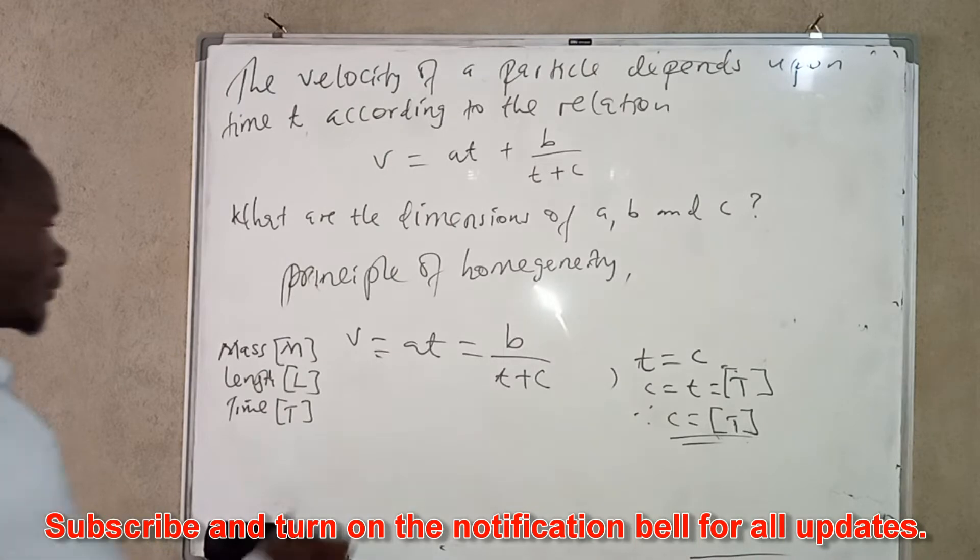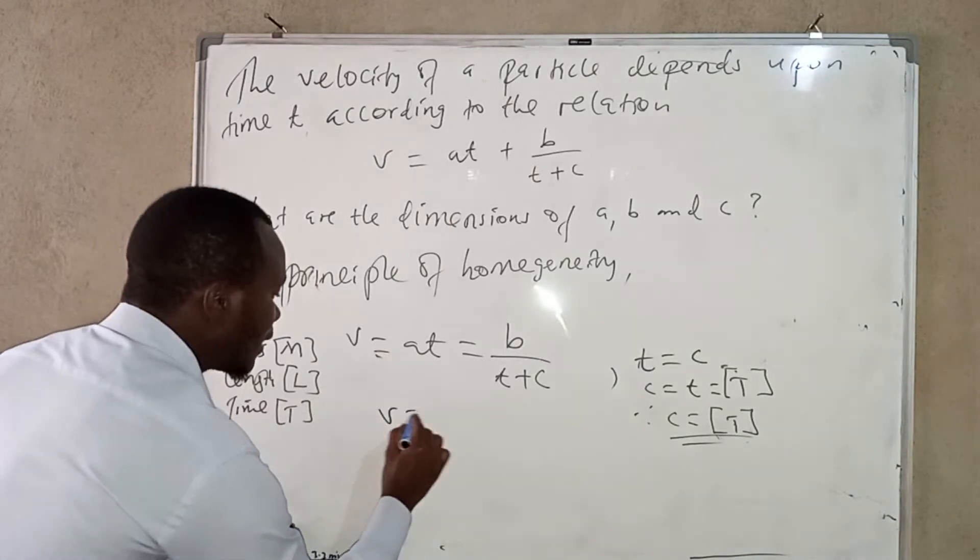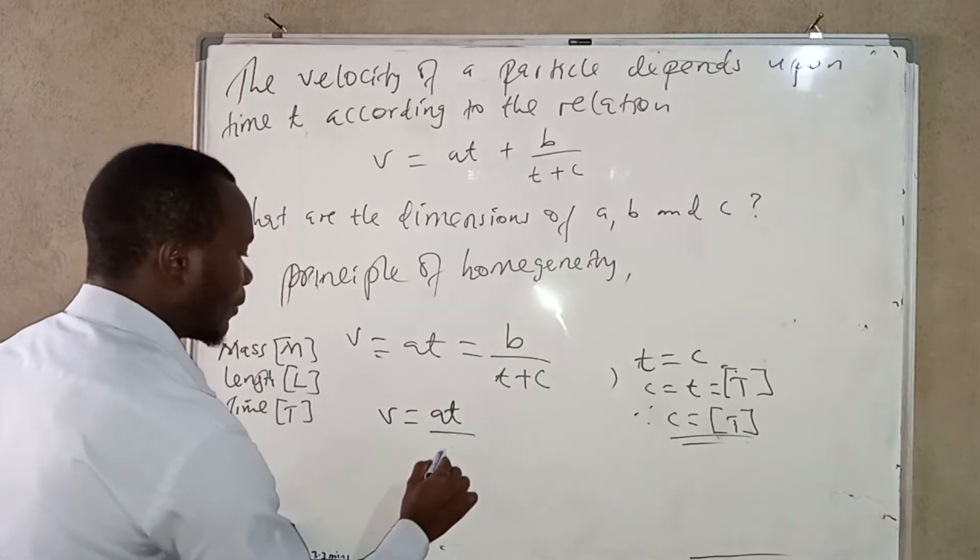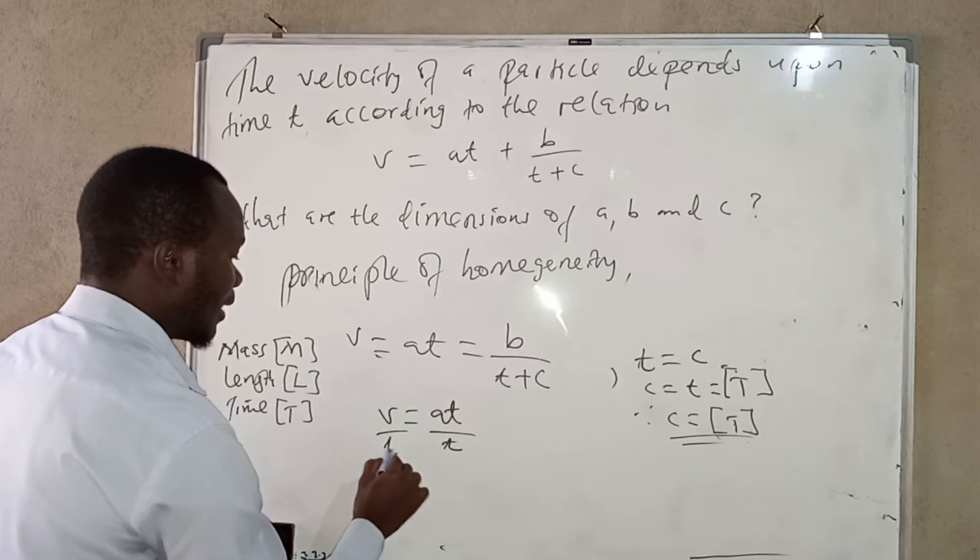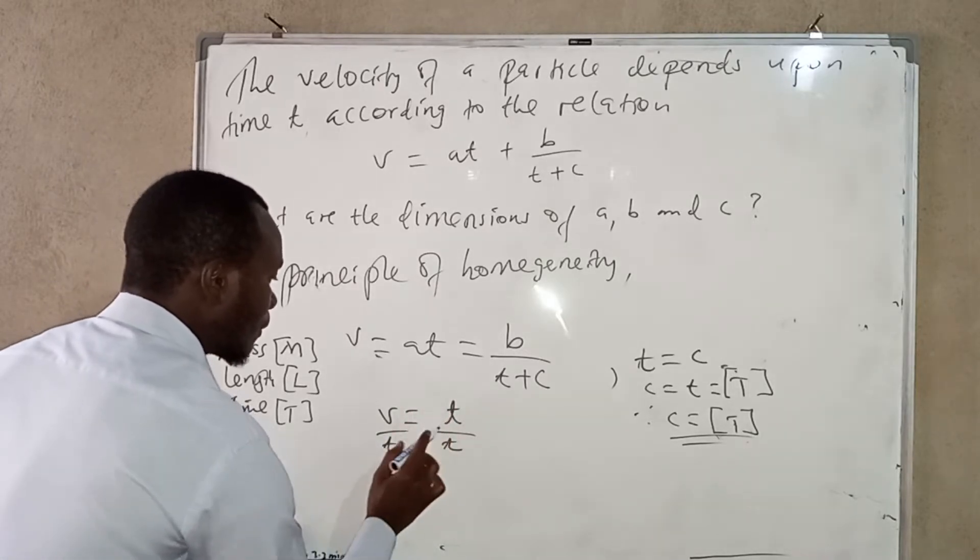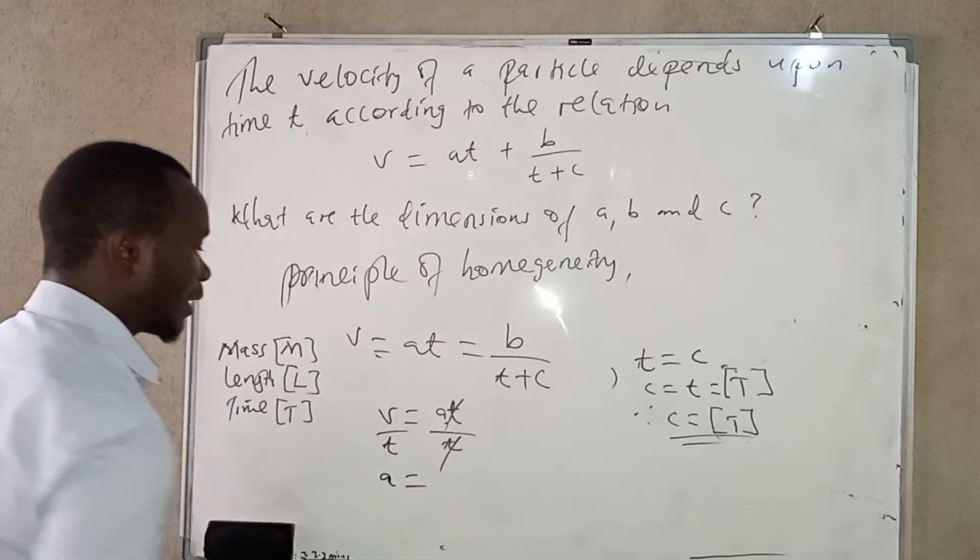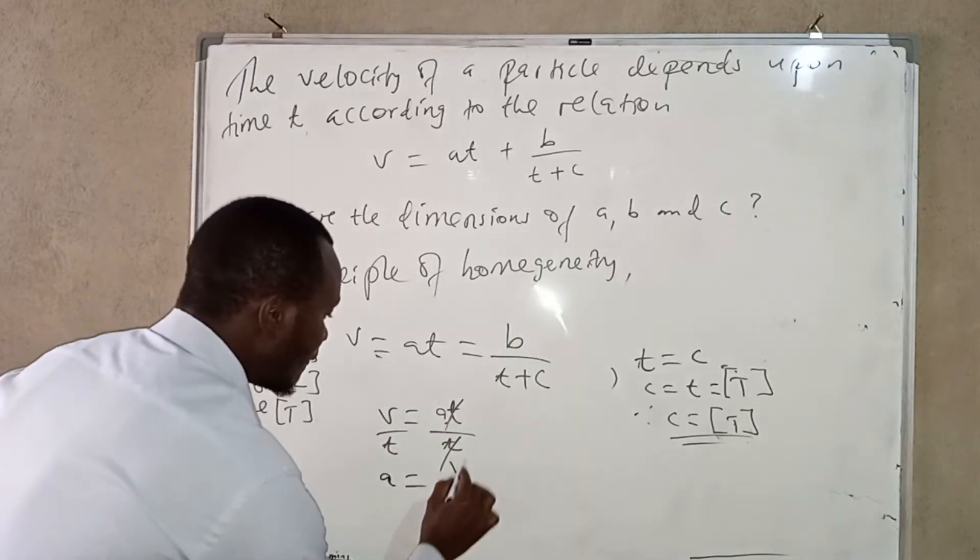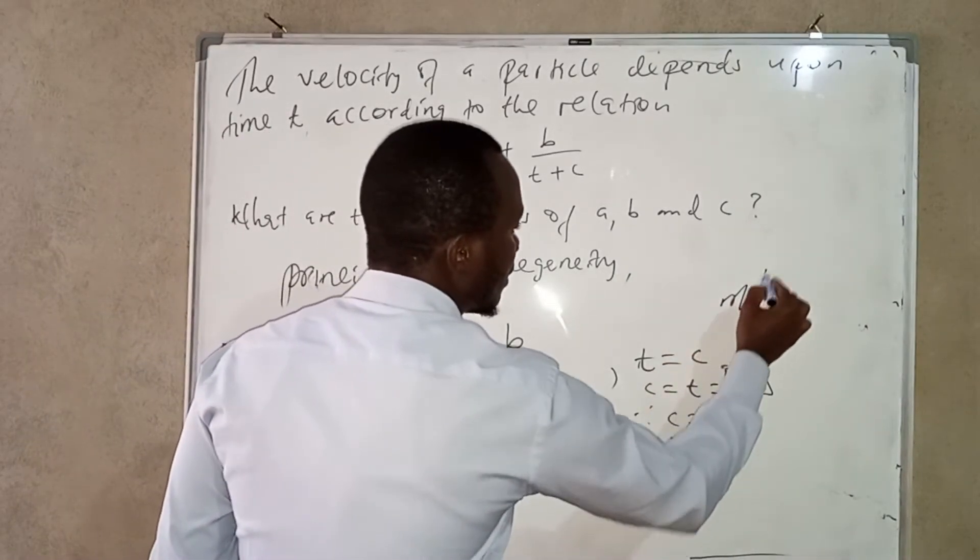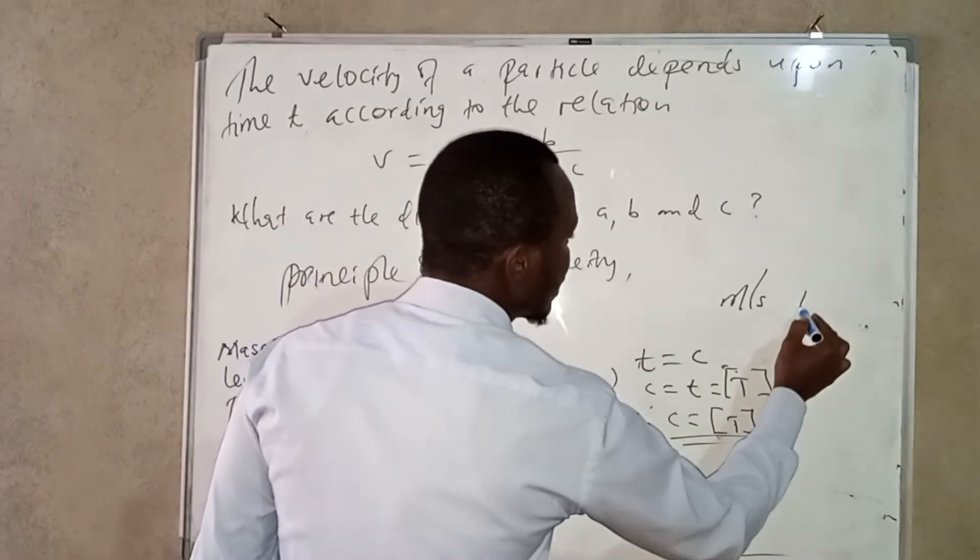For this one let's go to a. So v is equal to a t, so for this one you can just multiply divide by this and also here by this, so that this and this will go and we're going to have a is equal to v over t. So velocity is meters per second which in dimensions it is L.